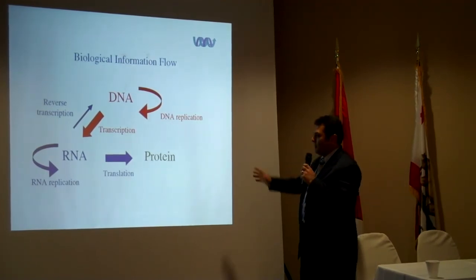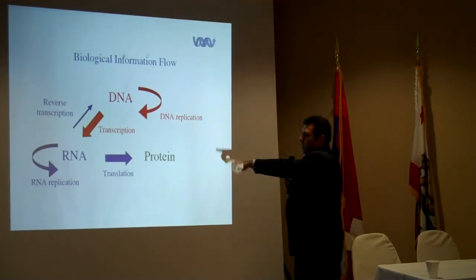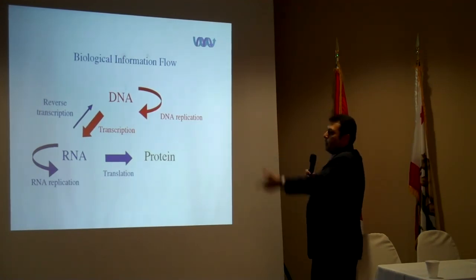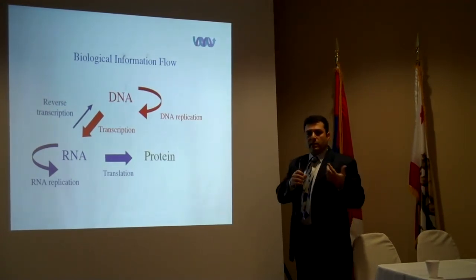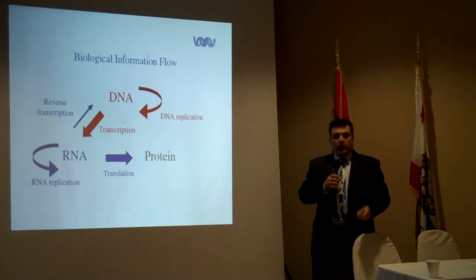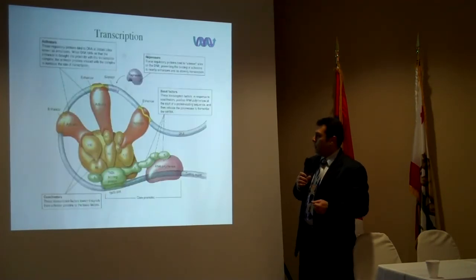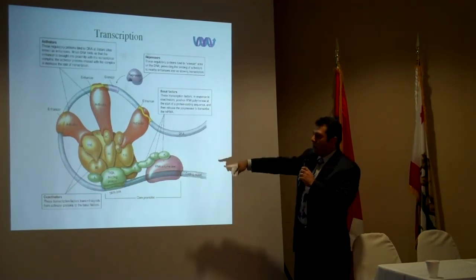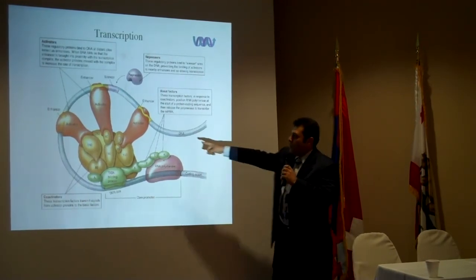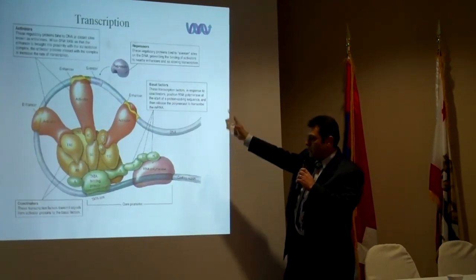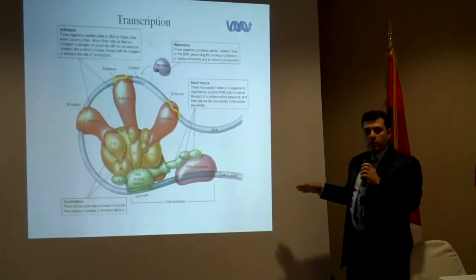Here is the biological information flow. There was a technical problem so the animation didn't work. DNA undergoes transcription to RNA; RNA is translated to protein. DNA also replicates itself, as does RNA — that's how we create new cells in our bodies. During transcription, many protein factors bind to DNA so that RNA polymerase can bind through the promoter region and start the coding process.